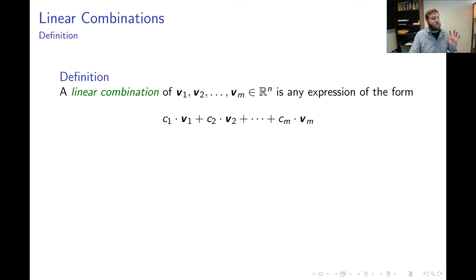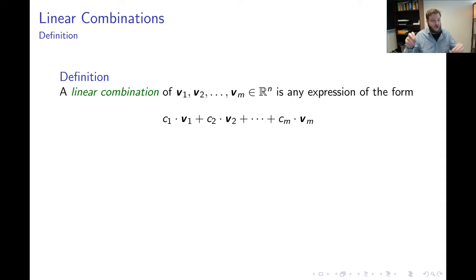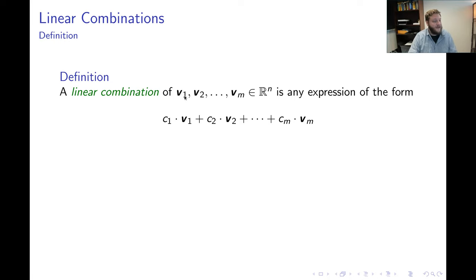The proper way to get started here is to understand the concept of a linear combination. The idea is if we combine the notions of scalar vector multiplication with vector addition, we get the concept of linear combinations. The setup is: let's say we start with a list of m vectors in R to the n. So we have vectors v1 through vm, and each of these vectors has the same number of coordinates — that's n.